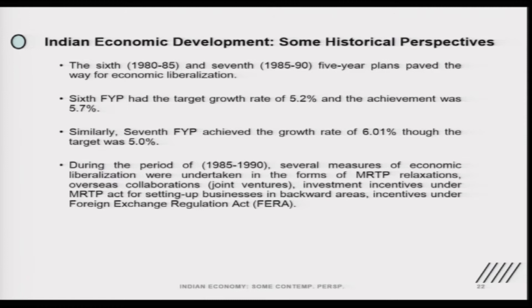During the period 1985 to 1990, many measures were taken for industrial growth. There was modification in the MRTP Act — MRTP relaxations were made. Companies were opened up for joint ventures, so foreign companies wanting to set up business in India could collaborate with Indian firms, who would be happy to set up plants and obtain required clearances. Investment incentives were also provided for setting up businesses, particularly in rural areas — a practice that continues today but was conceived during that time.